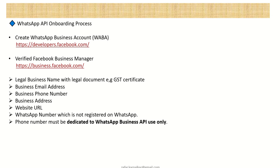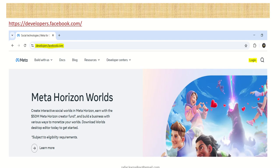Welcome back. In the previous lecture I explained what WhatsApp Cloud API and WhatsApp Business API are, and the difference between Meta Cloud API and the BSP. As I explained, whether going through Meta or BSP, you must create a WhatsApp Business account on developers.facebook.com and verify your Facebook Business Manager through business.facebook.com. In this lecture we'll go through a step-by-step procedure to perform all this.